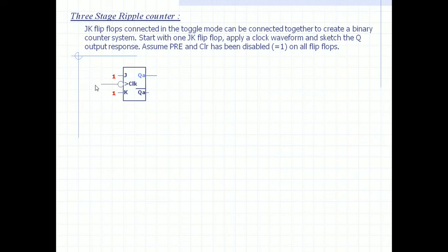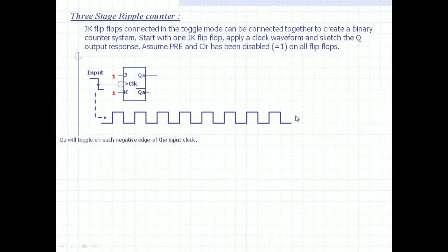We'll apply a clock waveform and sketch the output QA. Let us assume that preset and clear have been disabled on all flip-flops. This will be negative edge triggered. The input waveform will be pulsated. QA will toggle on each negative edge of the input clock.